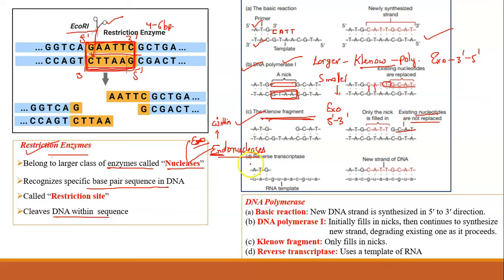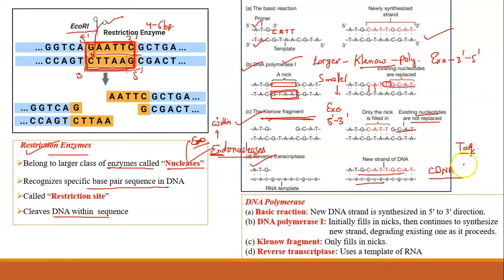Reverse transcriptase uses RNA as a template to synthesize a complementary DNA strand called cDNA. It is mainly needed when constructing a cDNA library. Taq polymerase is a thermostable polymerase used in PCR, isolated from bacteria living in hot springs like Thermus aquaticus, and can resist high temperatures required in the PCR process.